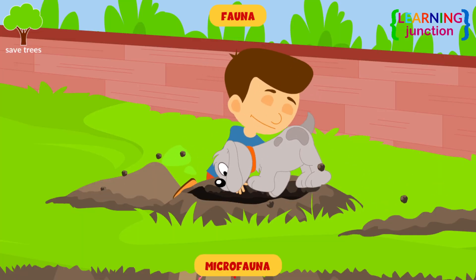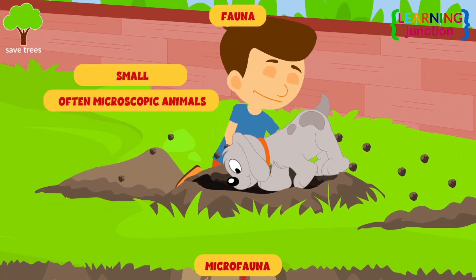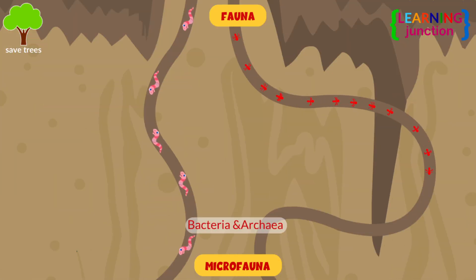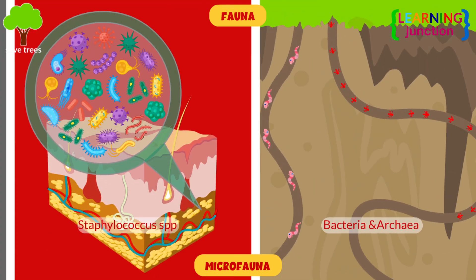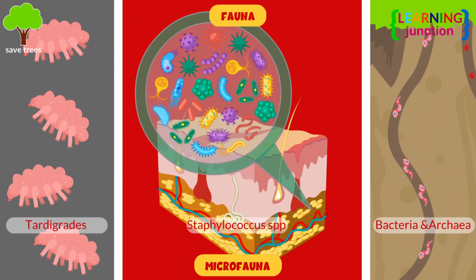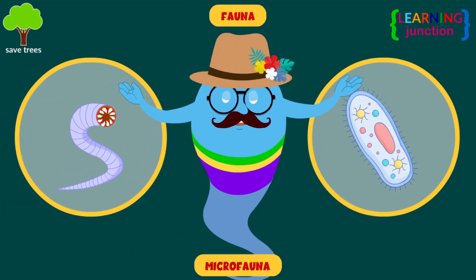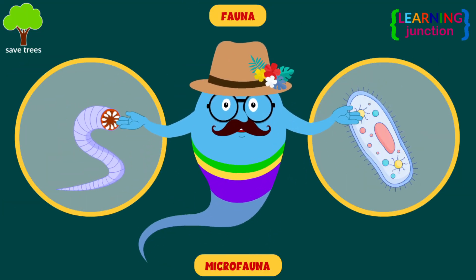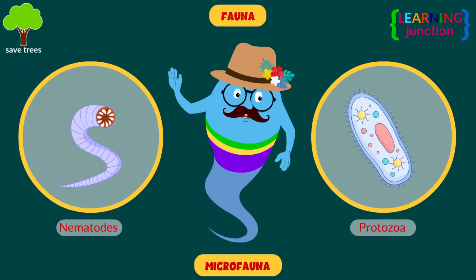Microfauna: they are small, often microscopic animals, especially those inhabiting the soil or other localized habitats. The two most common soil microfauna are the nematodes and the protozoa.